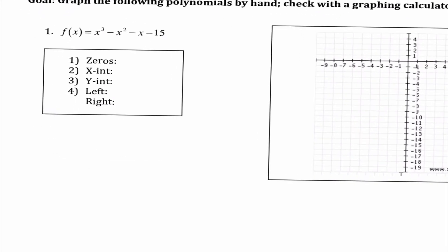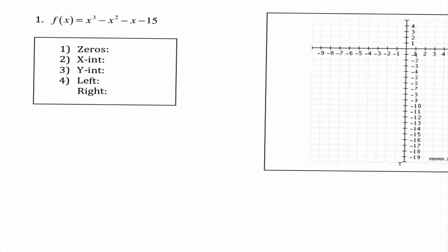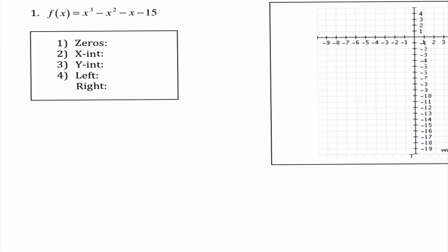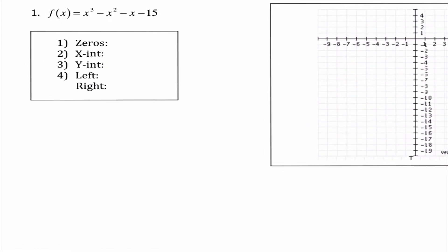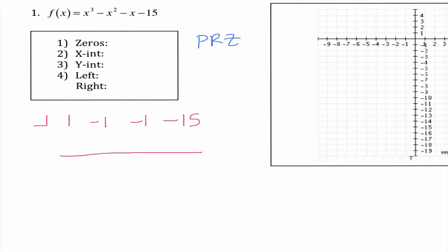Number one: I have f of x equals x cubed minus x squared minus x minus 15. The first thing I'm going to do — I don't think I can factor that — so I'm going to go ahead and set up synthetic division just like we did two classes ago. Our possible rational zeros, or PRZs, would be all the factors of 15.